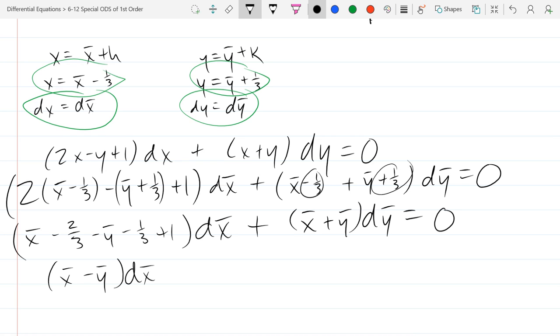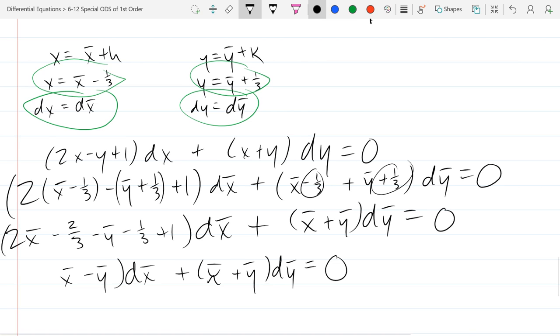And remember our constants should be disappearing. Hopefully. That's the whole reason we went around and did all this stuff. So minus one third plus a third. Those cancel out. That's pretty clear. So we have x bar plus y bar dy bar. And over here on the right side we have x bar minus two thirds minus y bar minus one third plus one. And we have negative two thirds minus a third plus one. Those all add up to zero. Not a coincidence. You better eliminate all your constants. So we just have x bar minus y bar dx bar plus x bar plus y bar. Would that be two x bar? Sure would be.